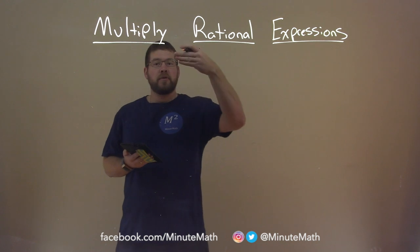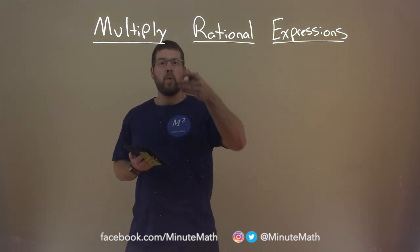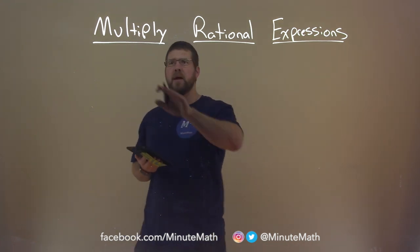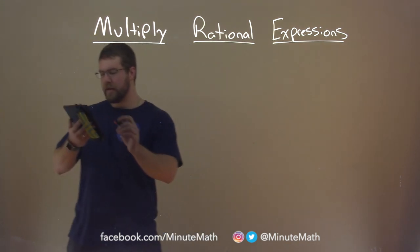Rational expressions, again, are two polynomials that are in a quotient, right, in a fraction. And so we're going to multiply two of them here. So let's go with an example.